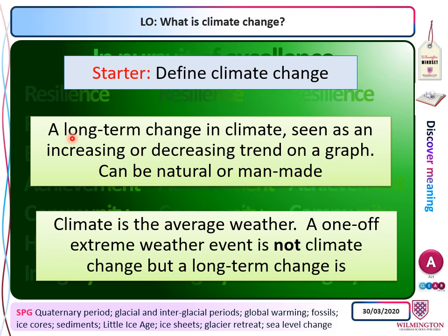Climate, as I just said, is the average weather. So a one-off extreme weather event, such as the droughts of Australia in 2019 and 2020, that's a weather event — it's not climate change.